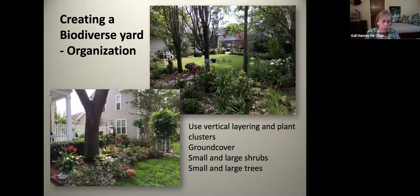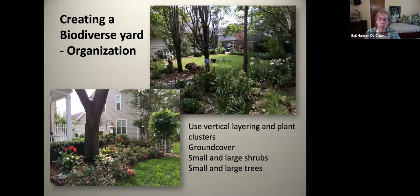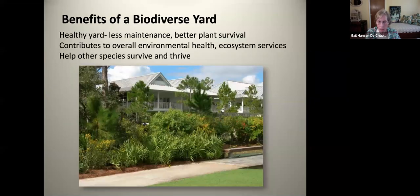Now you've picked your plants and made a plan — you have to think about the organization of the plants. Let's go back to vertical layering and plant clusters. You want to organize them so you have ground cover in areas, and then your small and large shrubs and your small and large trees. Arrange them in a way that's aesthetically pleasing but also helpful to wildlife in their vertical movement up and down, and creating different spots in the yard where wildlife can hang out.